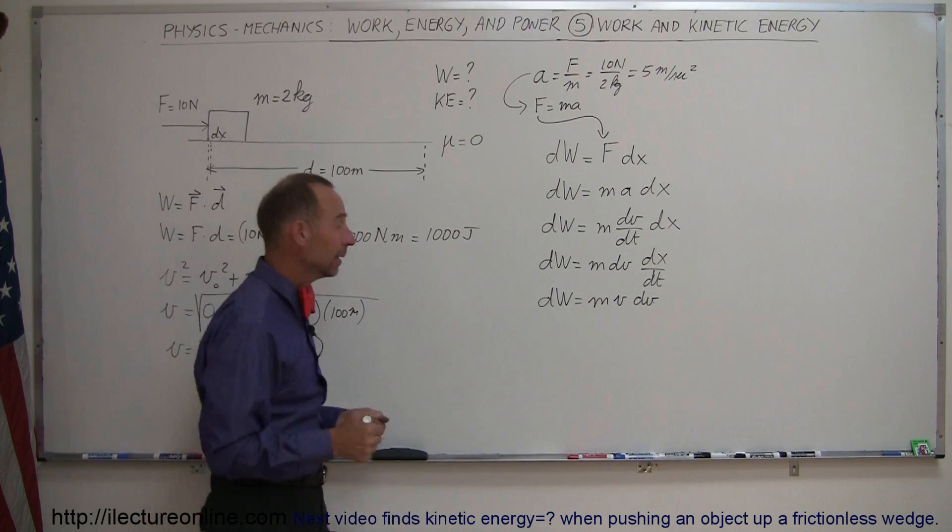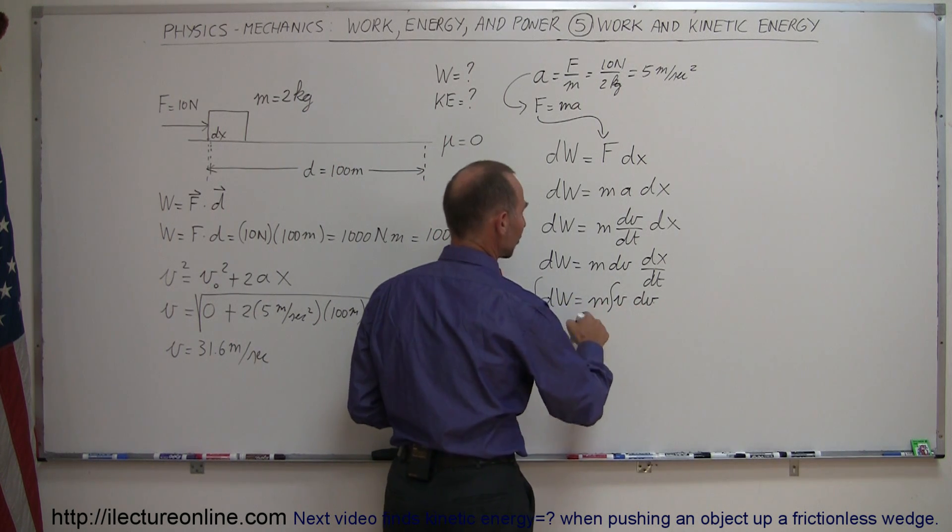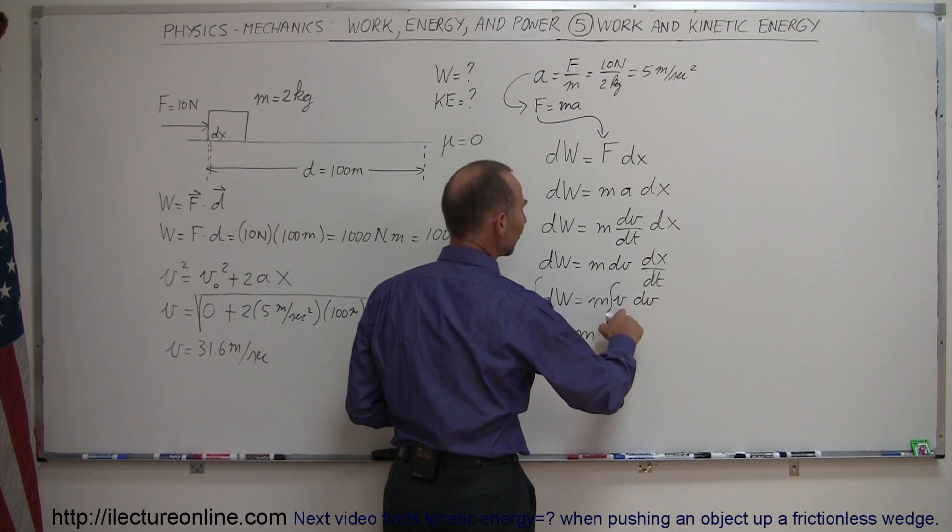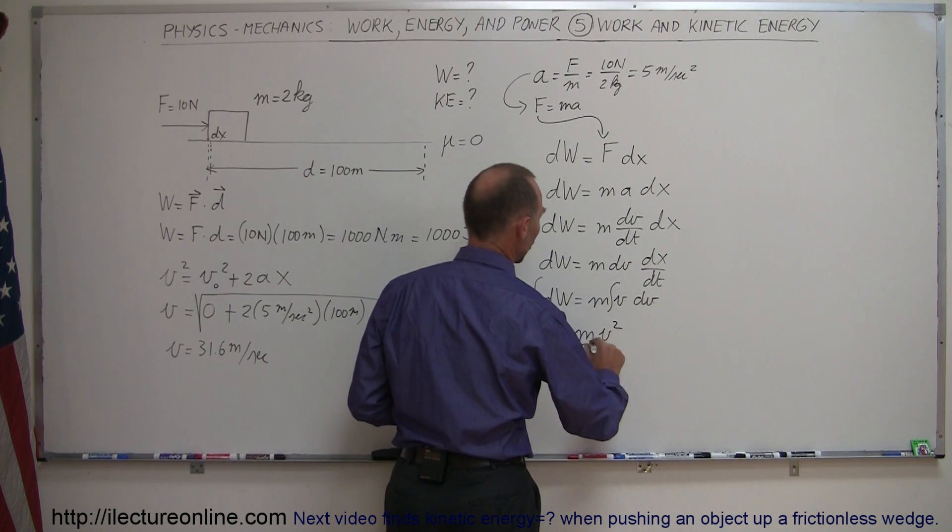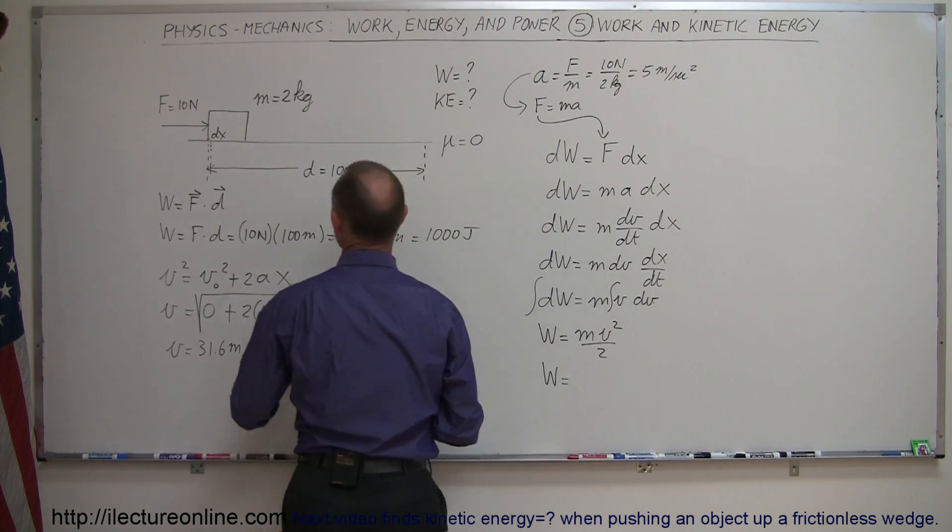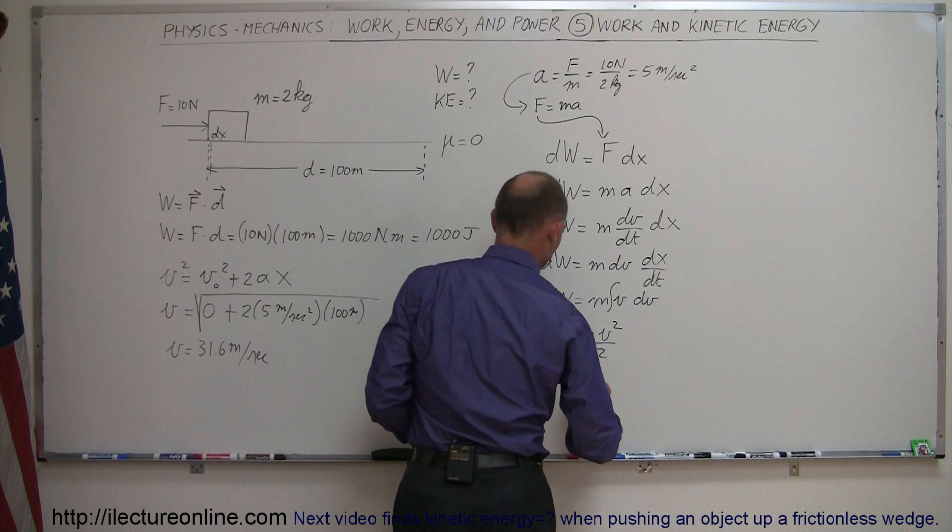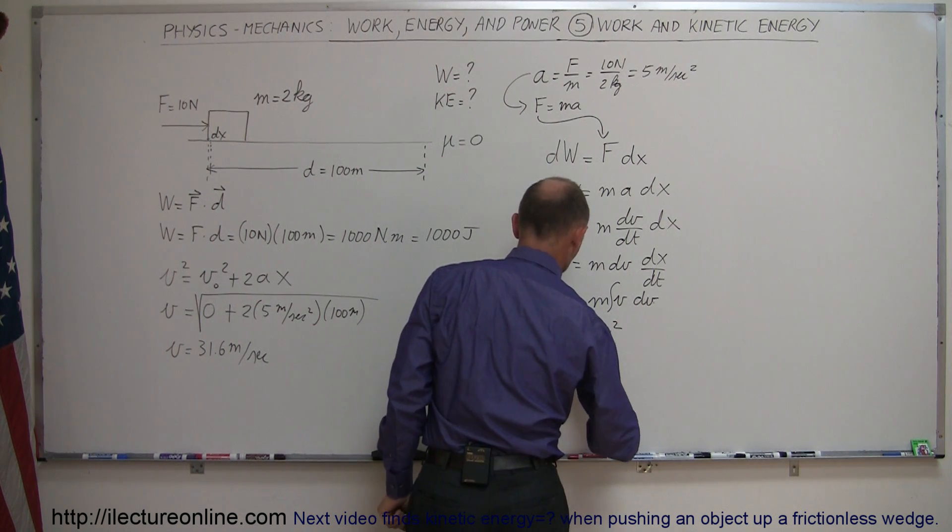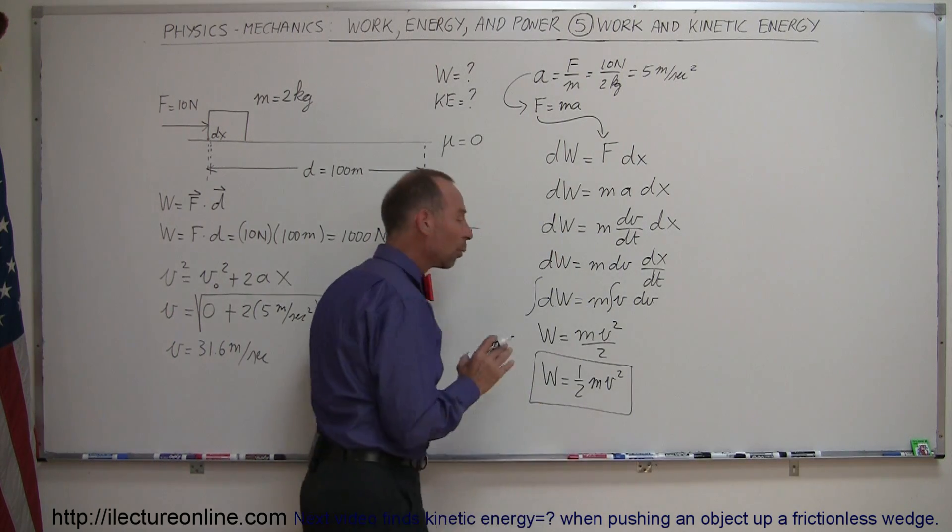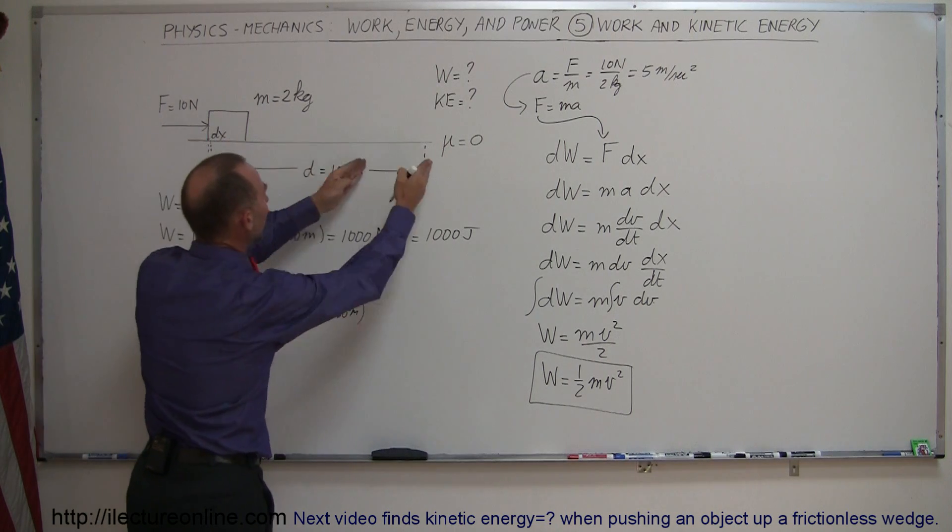And then I can go ahead and integrate both sides, so integrate the left side, integrate the right side. Of course m is a constant, so we get W is equal to m, the integral of vdV is v squared over 2. In other words, the work done to get the object from there to its final position, we can then say to its final velocity is equal to one half mv squared.